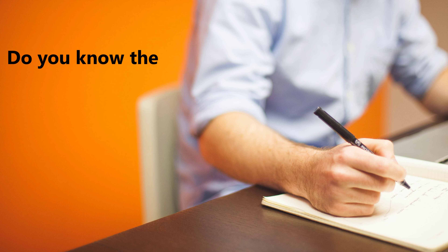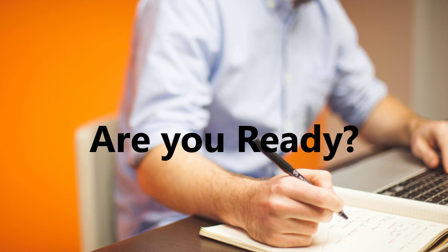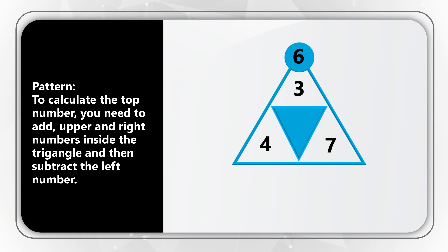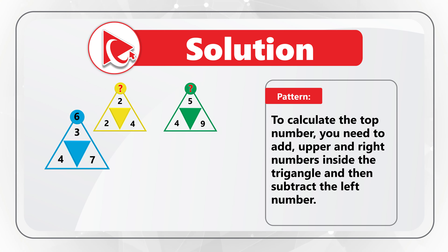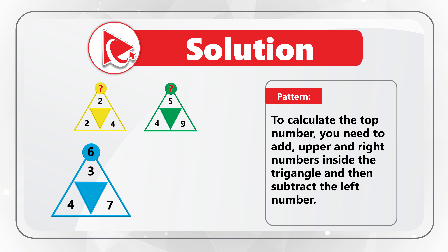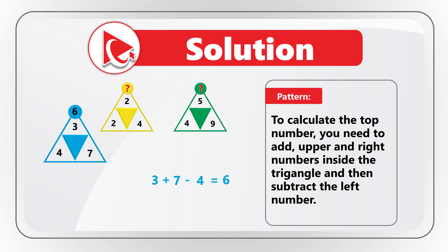The answer is not really obvious, but together we should be able to solve it. The pattern is: to calculate the number on top of the triangle, take the upper inside number, add the number on the right, then subtract the left number. For the blue triangle: 3 plus 7 minus 4 equals 6. For the green triangle: 5 plus 9 minus 4 equals 10. For the yellow triangle: 2 plus 4 minus 2 equals 4. So the correct choice is answer A, 10 and 4. Please post your answer and thought process in comments.